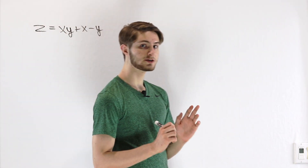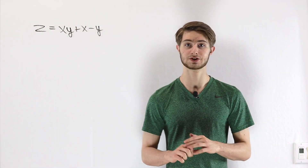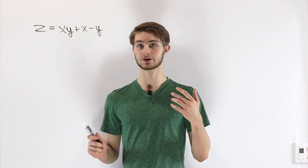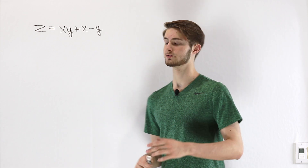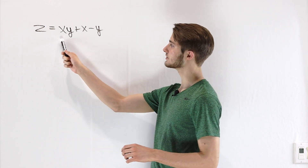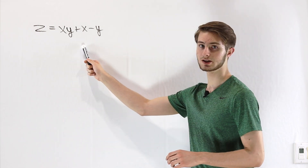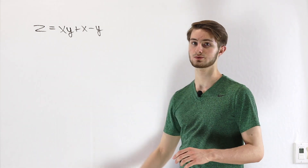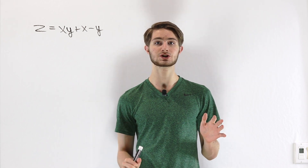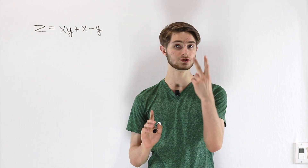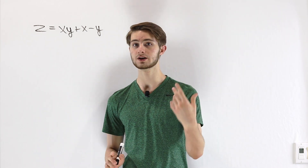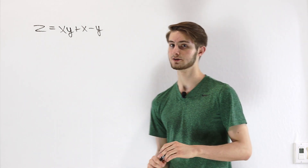We are going to talk about vector fields, and to do that we'll start by looking at an ordinary multivariable function. In this case, z equals xy plus x minus y. This function takes two inputs but gives us one number as an output.